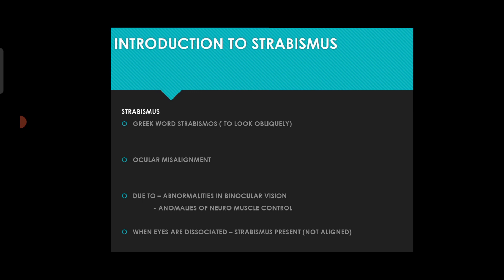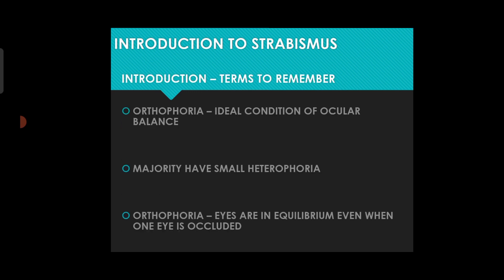Strabismus occurs due to abnormalities in binocular vision and anomalies of neuromuscular control. When the eyes are dissociated, strabismus is present — meaning the visual directions of the two eyes do not meet at a point.